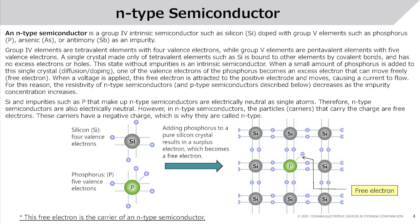N-type Semiconductor. An n-type semiconductor is a Group 4 intrinsic semiconductor such as silicon, doped with Group 5 elements such as phosphorus, arsenic, or antimony as an impurity. Group 4 elements are tetravalent with 4 valence electrons, while Group 5 elements are pentavalent with 5 valence electrons. A single crystal made only of tetravalent elements such as silicon has no excess electrons or holes — this is an intrinsic semiconductor.